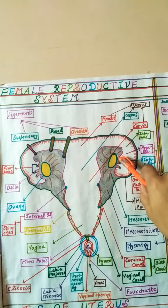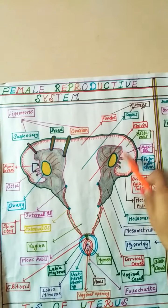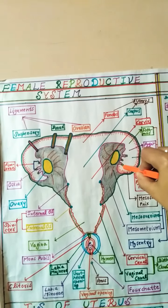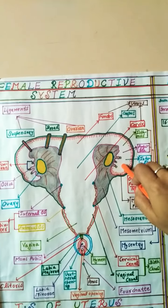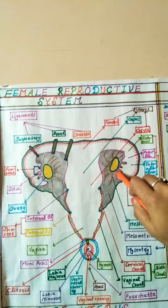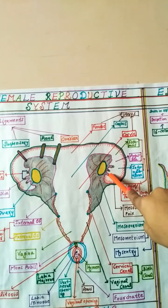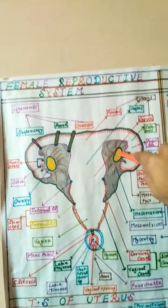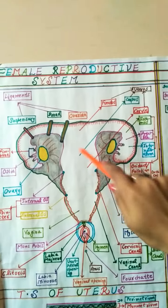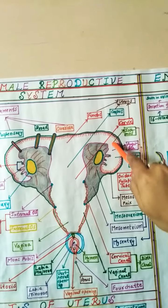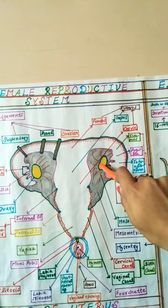The infundibulum has finger-like projections called fimbriae and small openings called ostia. These finger-like projections help in catching the ovum from the ovary and transporting it toward the uterus through the oviduct.